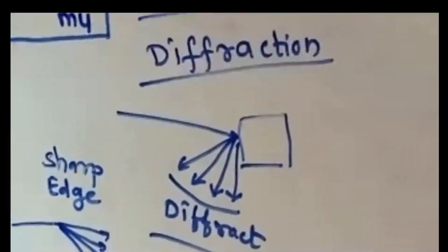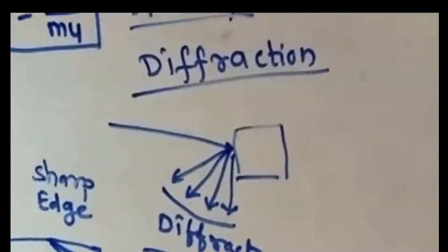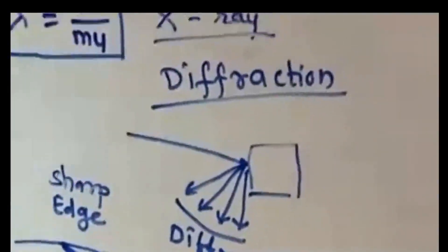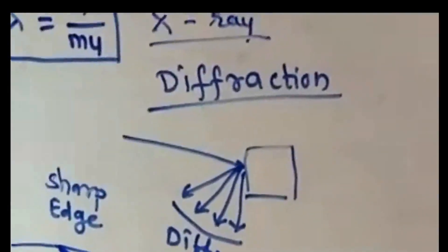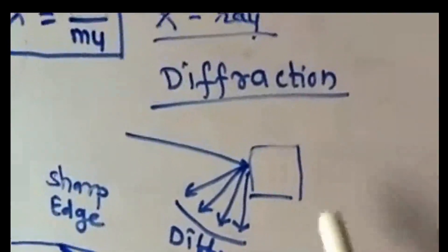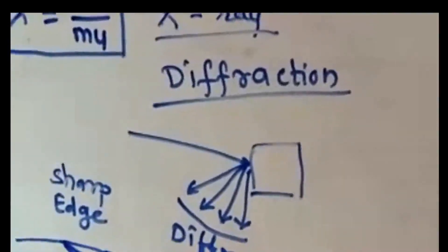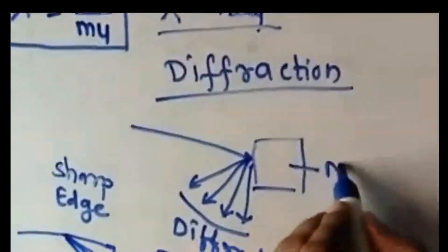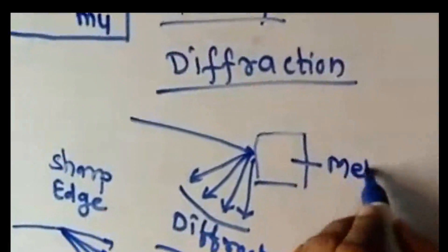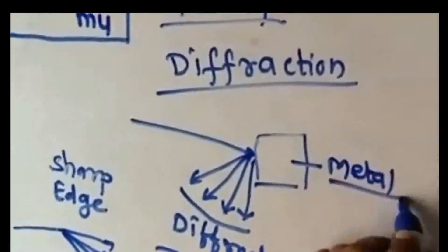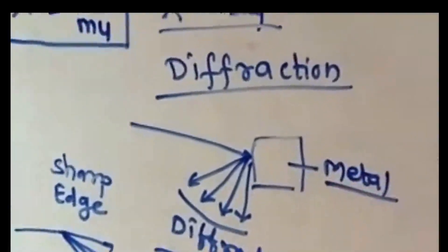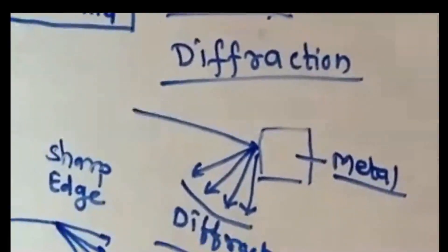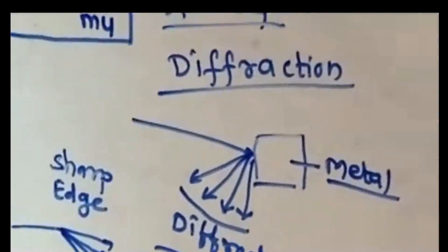Diffraction is a particular character of waves. We will discuss diffraction of X-rays. If you have a beam of X-rays incident on a metal, the X-ray beam undergoes diffraction, and diffraction is a special property of waves.